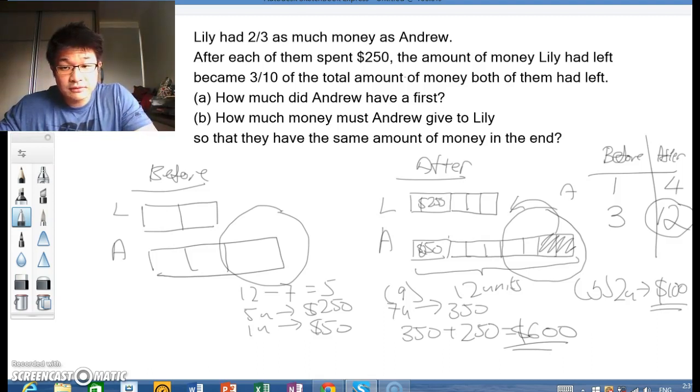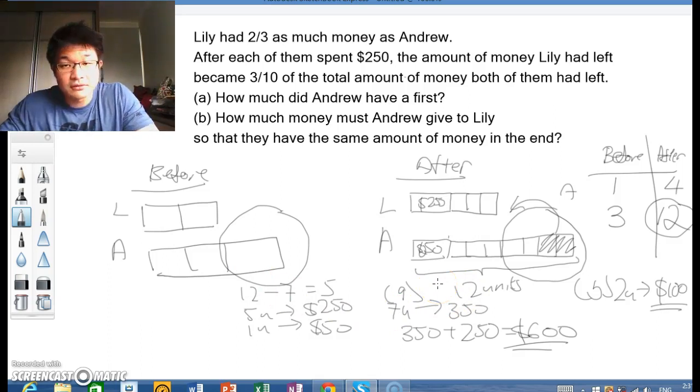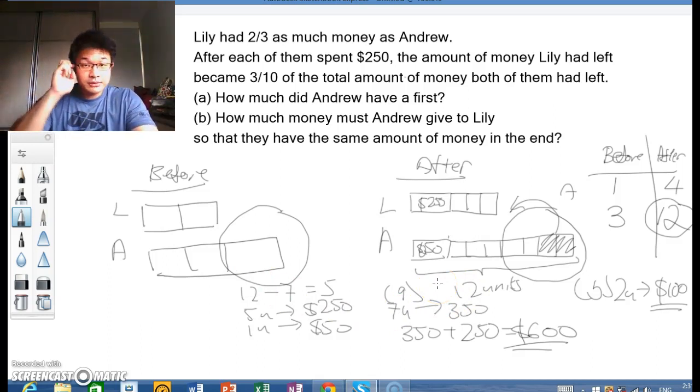So here you have it, how to solve this question. The real trick is really to be able to see that this one unit here is actually equivalent to 4 units. So we can eventually work out these 3 units to become 12 units. And then with that, we can basically solve the whole question. So I hope today's question and the explanation was clear enough for all of you. And I look forward to sharing the next one with you. Thank you and have a good day ahead. Bye.